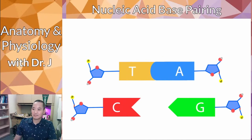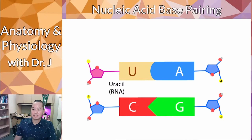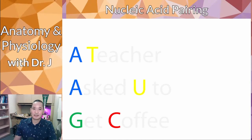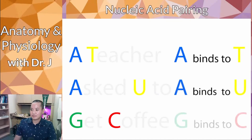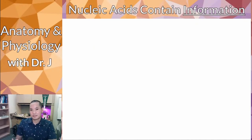The normal base pairing is A with T, and C with G. But remember, RNA doesn't have thymine — it has uracil — so when DNA binds to RNA, or RNA binds to RNA, it's A to U. Here's a mnemonic: 'A teacher asked you to get coffee.' That tells you the base pairing: A and T, G and C in DNA, and A and U in RNA. So A binds to T, A binds to U, and G binds to C.